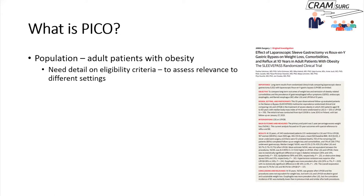The population is obviously adult patients with obesity, and we probably need a lot more detail to clearly explain what this population is. You will need detail on eligibility criteria — what you mean by adults, what the age cutoffs are, how you define obesity, and what kind of filters you would apply to an obese adult patient who's being subjected to surgery.